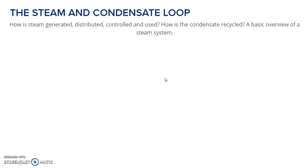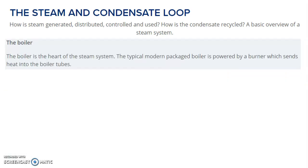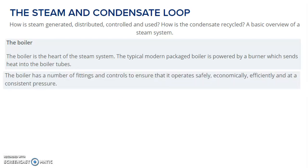What are the main constituents of such a loop? Beginning with the boiler — the boiler is the heart of the steam system. The typical modern packaged boiler is powered by a burner which sends heat into the boiler tubes. The boiler has a number of fittings and controls to ensure that it operates safely, economically, efficiently and at consistent pressure. This is component number one of the steam and condensate loop.